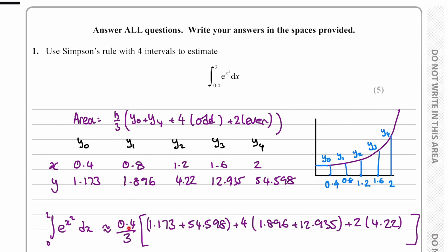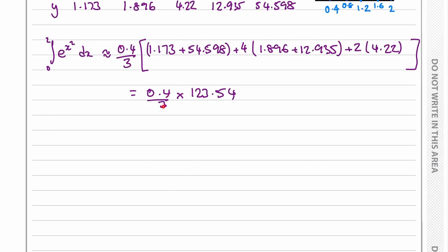0.4, which is our h value, over three, times four lots of the odd y values and two lots of the even. We can work out all of this on the calculator and we get 0.4 over 3 times 123.54, which is the sum of all of this.